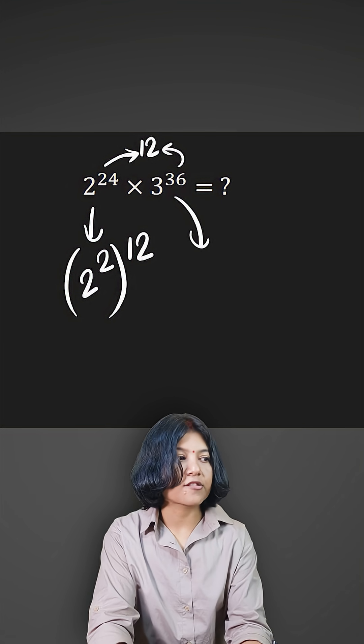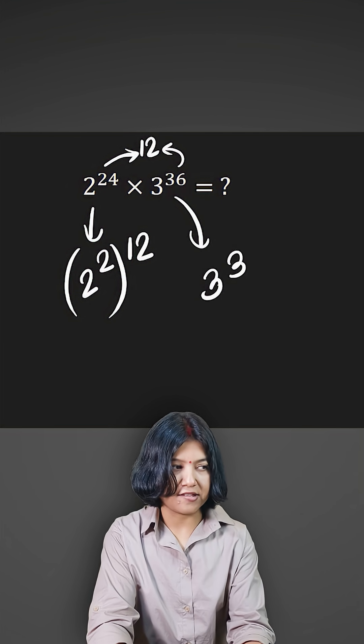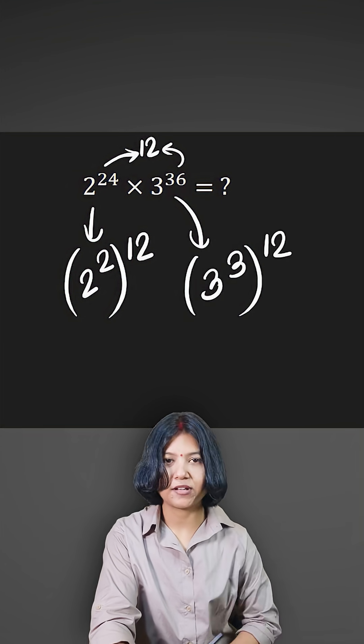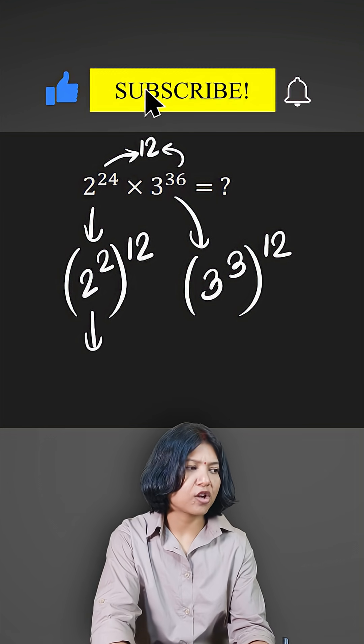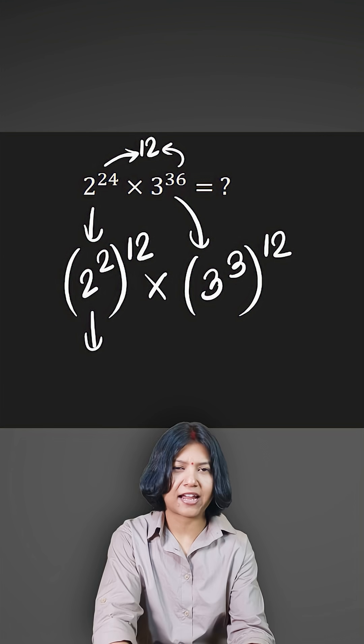Similarly for this one, 12 into 3 is 36, so I'm going to write the power of 3 inside and outside I'll write 12. Why did I do it? Now you can solve this quite easily. You have to multiply and the powers are the same now.